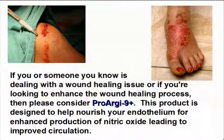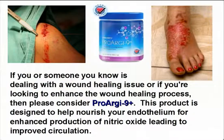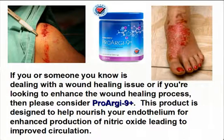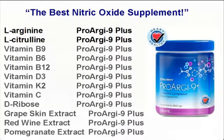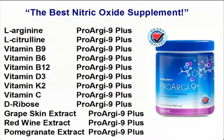If you or someone you know is dealing with a wound healing issue, or if you're looking to enhance the wound healing process, then please consider ProRx9+. This product is designed to help nourish your endothelium for enhanced production of nitric oxide, leading to improved circulation. This product contains pharmaceutical grade L-arginine with L-citrulline to help recycle L-arginine for long-term production of nitric oxide. Additionally, ProRx9+ contains ingredients all designed to support endothelial cell health and function, which has the potential to enhance the wound healing process.